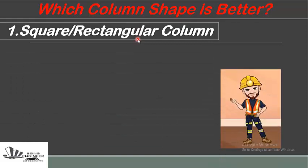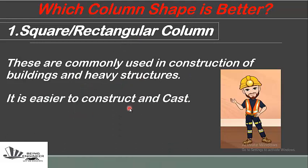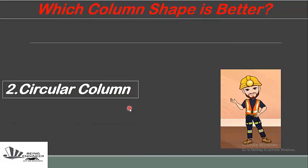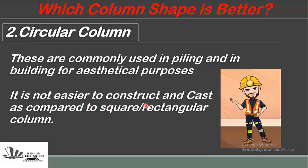Square or rectangular columns are commonly used in construction of buildings and heavy structures. They are easier to construct and more cost-effective. Circular columns are used in piling and buildings for aesthetical purposes and beautification. They are not as easy to construct and cost-effective as square or rectangular columns due to their shuttering and formwork requirements.